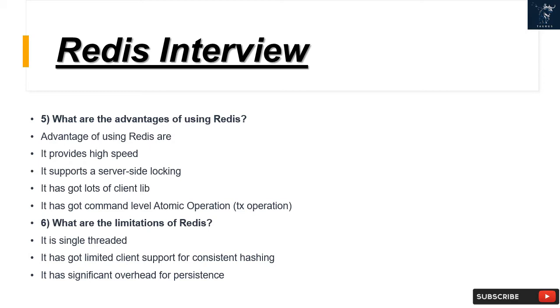Question 6: What are the limitations of Redis? It is single-threaded, has limited client support for consistent hashing, has significant overhead for persistence, and is not deployed widely.